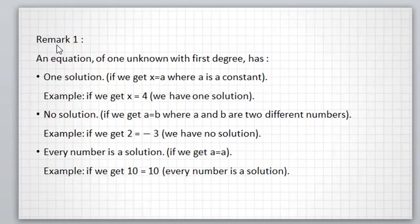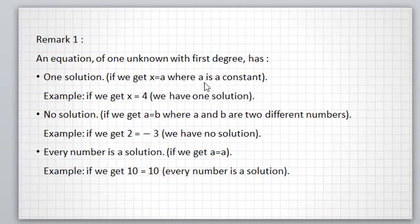Remark 1: An equation of one unknown with first degree has one solution if we get x equal a, where a is a constant. Example: if we get x equal 4, then we have one unique solution.